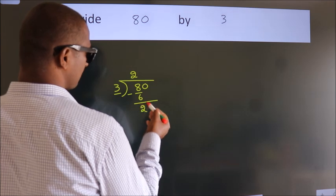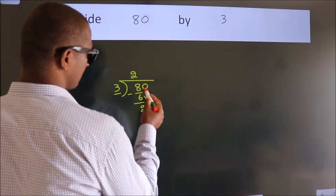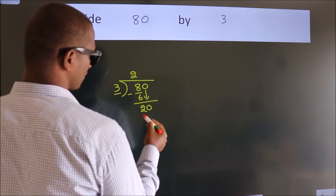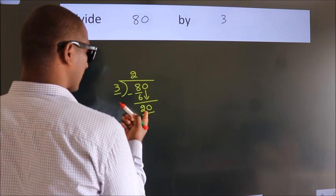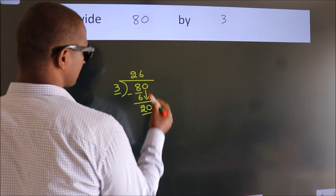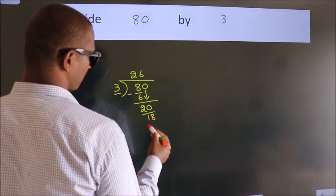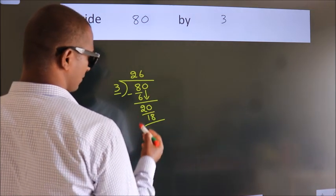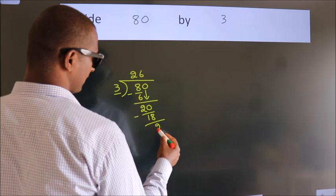After this, bring down the beside number. So 0 down. So 20. A number close to 20 in the 3 table is 3×6=18. Now we subtract. We get 2.